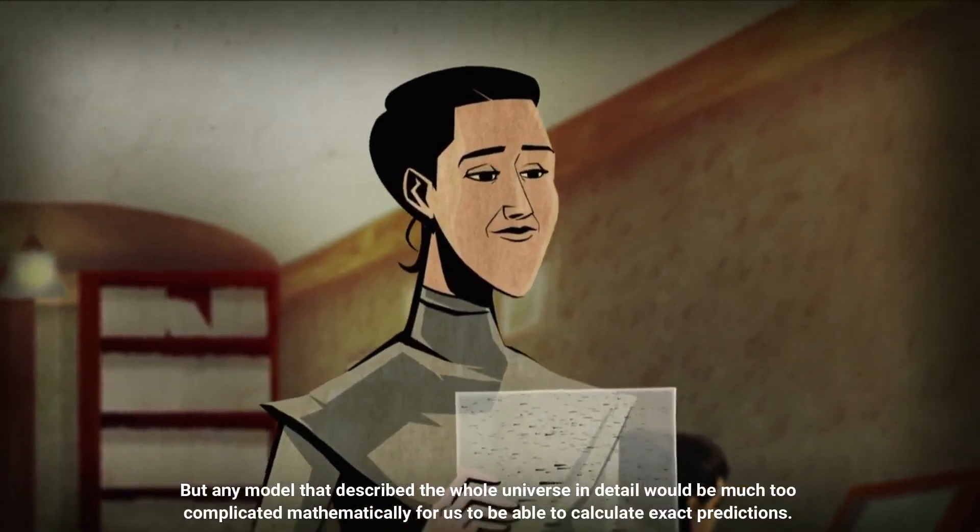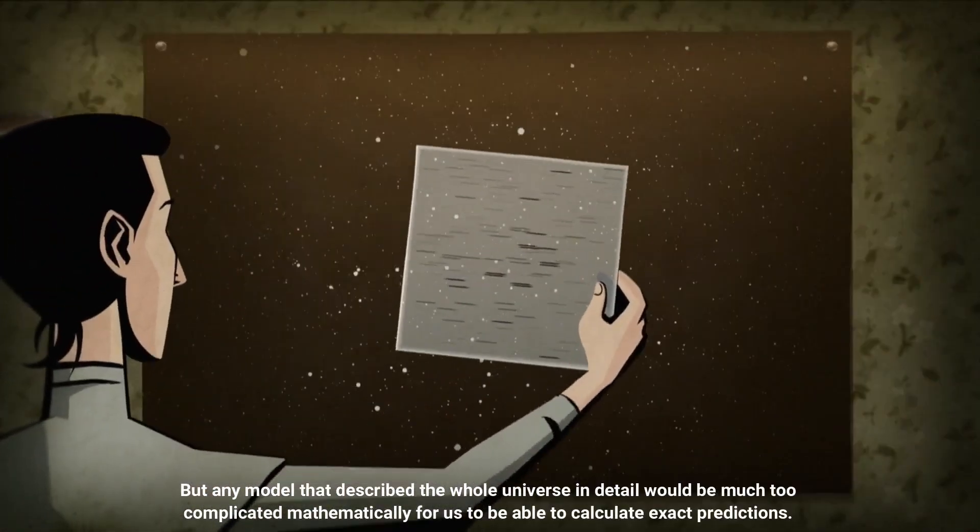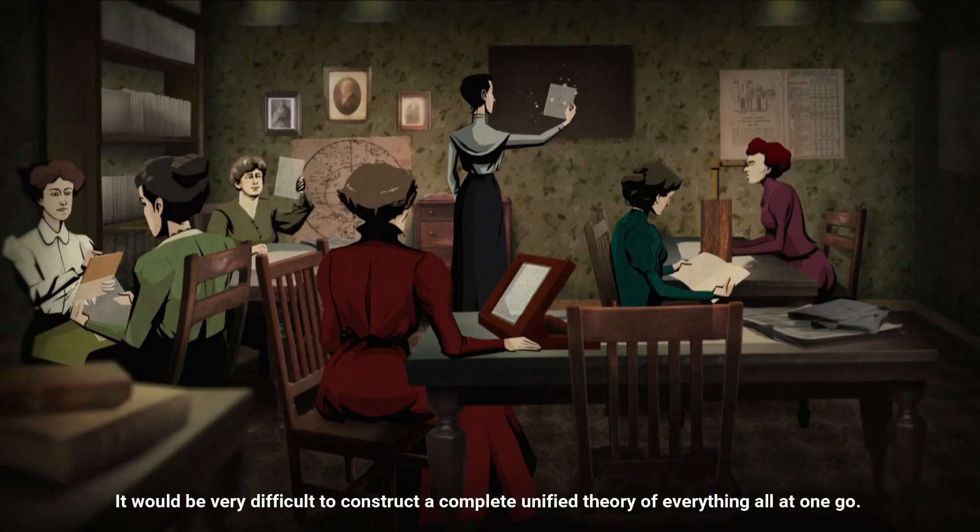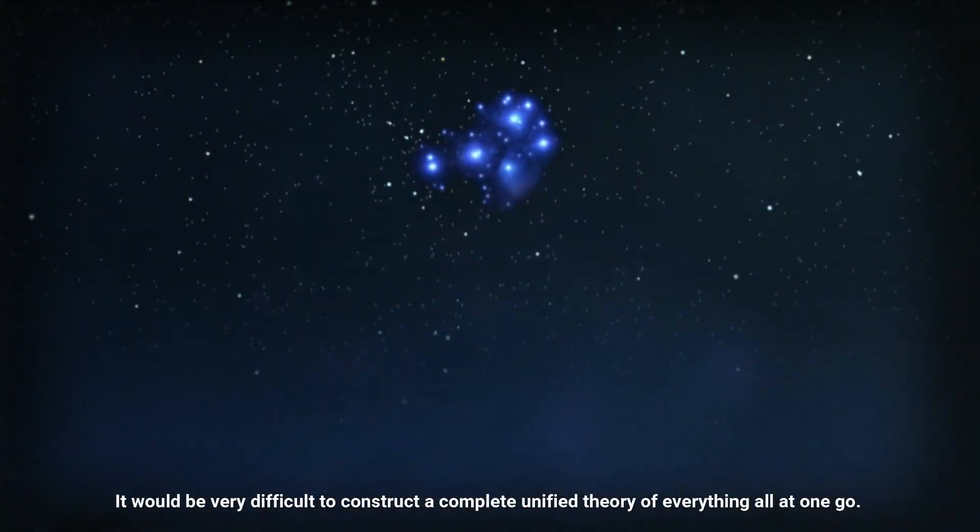But any model that described the whole universe in detail would be much too complicated mathematically for us to be able to calculate exact predictions. It would be very difficult to construct a complete unified theory of everything all at one go. So instead, we have made progress by finding partial theories.